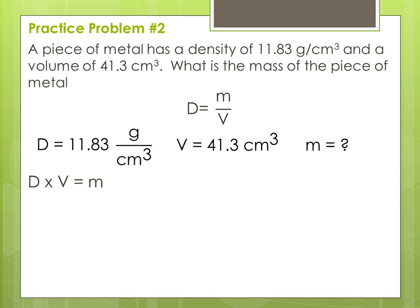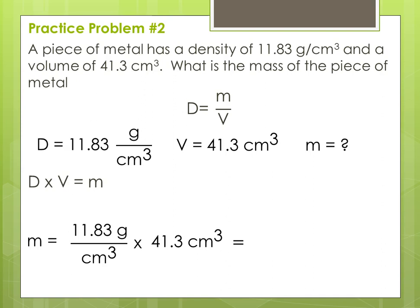Now we can start our calculations by plugging in the numbers. Mass is going to be equal to D, our density, times V, our volume. Now we need to inspect units and cancel where appropriate. Centimeters cubed divided by centimeters cubed equals 1 — it goes away. We plug these numbers into our calculator and we get 488.579. That has six significant digits. We need to look at the measurement we were given, which was our volume, and the volume had three significant digits.